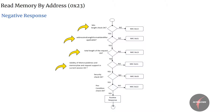This is followed by a check on the validity of the memory address and memory size and the request support in the current session, which if it fails leads to NRC 0x31. Next, there is a check on the security to confirm if secure access is required for the service or if the ECU has the right access — if this check fails, it leads to NRC 0x33. Lastly, there is a check on the fulfillment of preconditions before executing the service, which if it fails leads to NRC 0x22. If all the above checks pass, then a positive response for the service shall be provided.